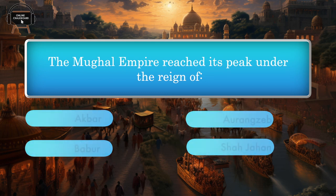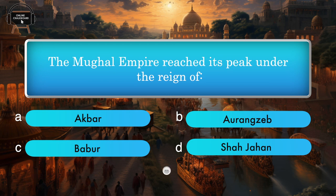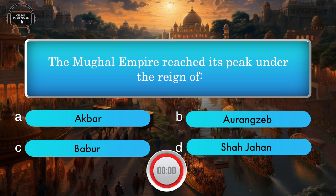The Mughal Empire reached its peak under — Akbar, Aurangzeb, Babur, Shah Jahan. Answer: Akbar.